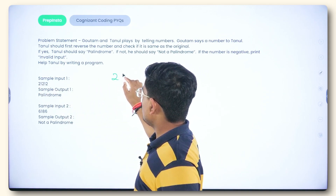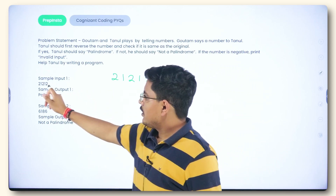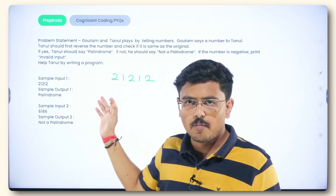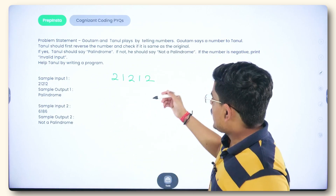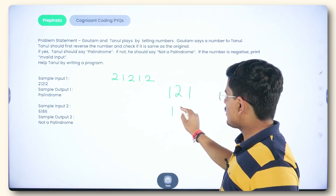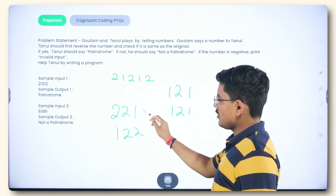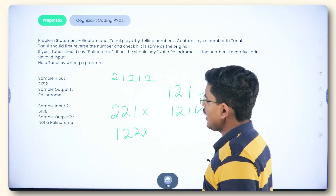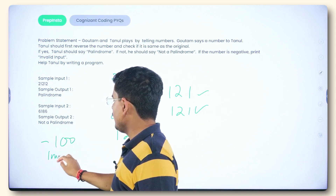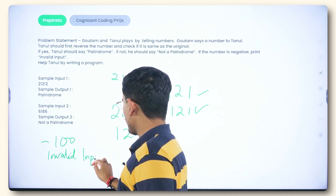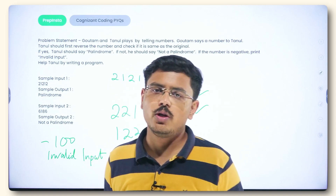For example, the sample input is 21212. If you start reversing it, you get 21212 — the same number. When the reverse of a given number equals the original, it is called a palindrome. For example, 121 reversed is still 121 — palindrome. But 221 reversed is 122 — not a palindrome. And if the input were something like minus 100, we should print 'invalid input'.